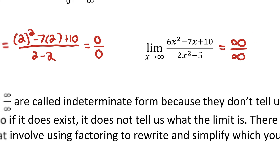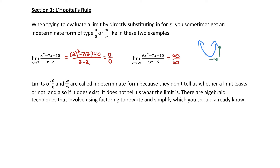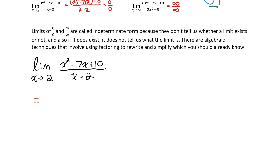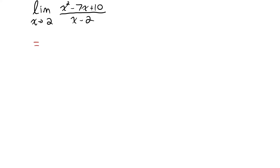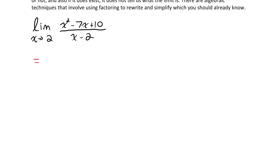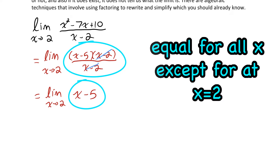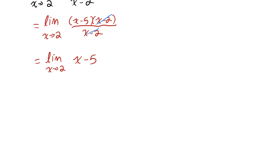Let me first show you what you should already know how to do with these. For the first limit, when you get indeterminate form of 0 over 0, a good strategy is to rewrite the function by factoring the numerator. Then I can cancel the common factors of x minus 2, and direct substitution on the simplified expression gives 2 minus 5, which is negative 3.